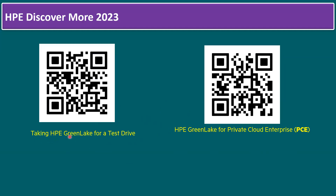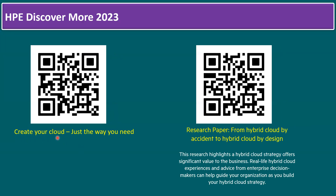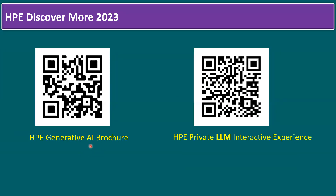There are also QR codes for specific topics: taking HPE GreenLake for a test drive, GreenLake for Private Cloud Enterprise, creating your cloud the way you need, hybrid cloud solutions, the HPE Generative AI brochure, and an HPE private large learning module interactive experience — all to help you understand more about the HPE GreenLake Edge-to-Cloud platform.